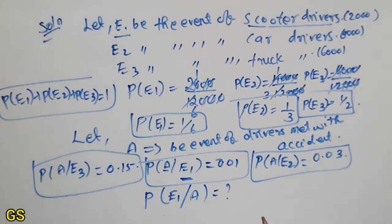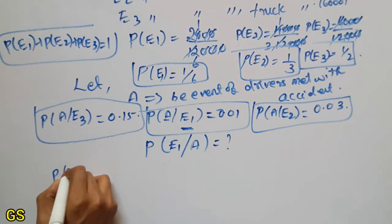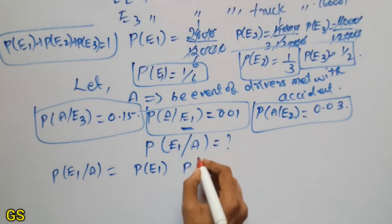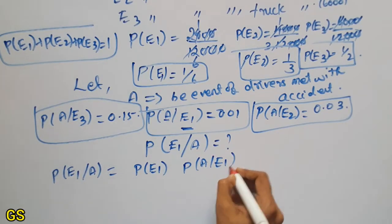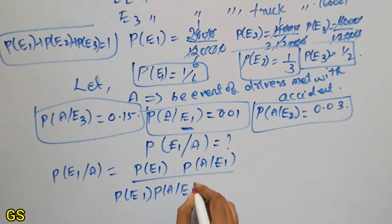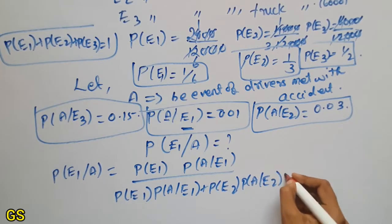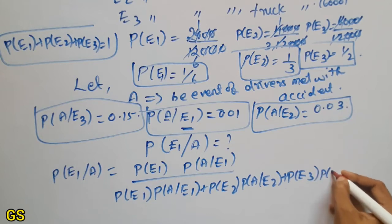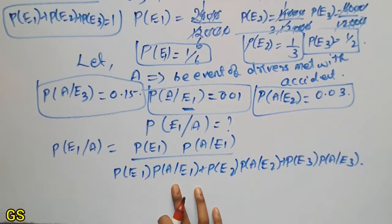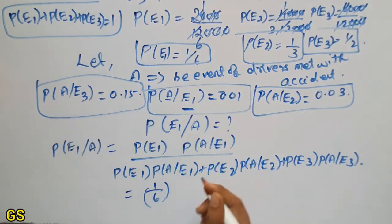So P(E1 given A) is given. Now we are going to solve the question. If P(E1|A), we have the formula: P(E1|A) = P(E1) · P(A|E1), divided by the sum P(E1)·P(A|E1) + P(E2)·P(A|E2) + P(E3)·P(A|E3). Now we are going to substitute this term. P(E1) is 1/6.